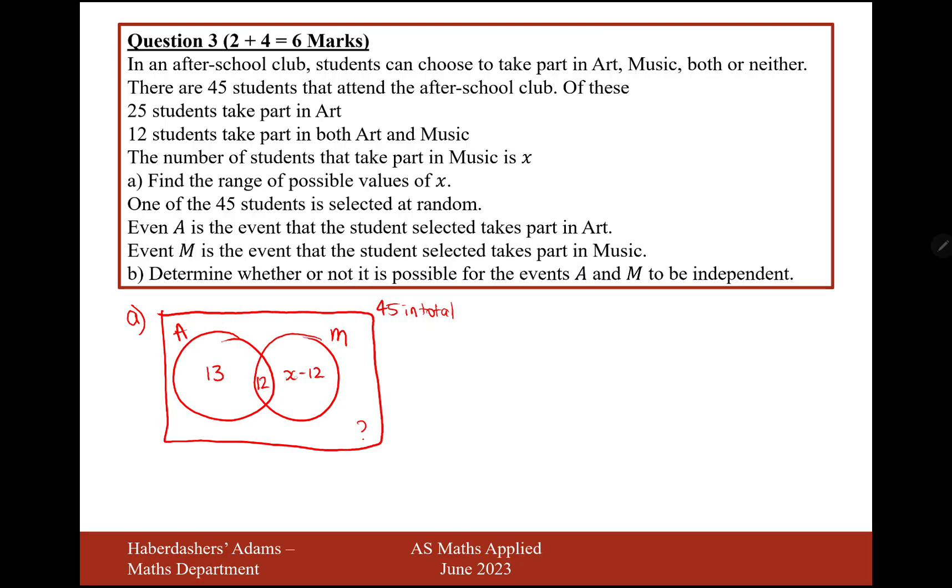I would imagine the lower bound is going to be 12, because we don't want a minus number appearing in this box here. So I'm going to go for the lower bound being x equals 12.